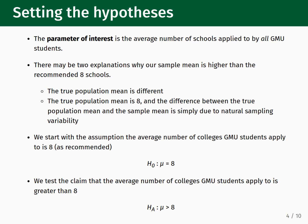For our null hypothesis, we assume the average number of colleges GMU students apply to equals 8. Formally, the way we write this down is H sub 0 colon mu equals 8. For our alternative hypothesis, we are claiming that the average number of colleges GMU students apply to is greater than 8. Formally, the way we write this down is H sub A colon mu greater than 8.